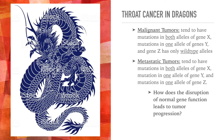A malignant tumor tends to have mutations in both alleles of gene X and a mutation in one allele of gene Y, while metastatic tumors tend to have mutations in both alleles of gene X, a mutation in one allele of gene Y, and mutations in one allele of gene Z.